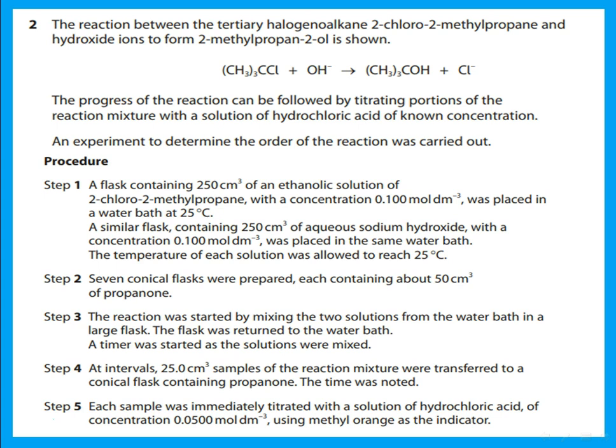The temperature of each solution was allowed to reach 25°C. Seven conical flasks were prepared each containing about 50 cm³ of propanone. The reaction was started by mixing the two solutions in a large flask, which was returned to the water bath. A timer was started as the solutions were mixed. At intervals, 25 cm³ samples of the mixture were transferred to a conical flask containing propanone and the time was noted. Each sample was immediately titrated with HCl of concentration 0.05 mol/dm³ using methyl orange as indicator.